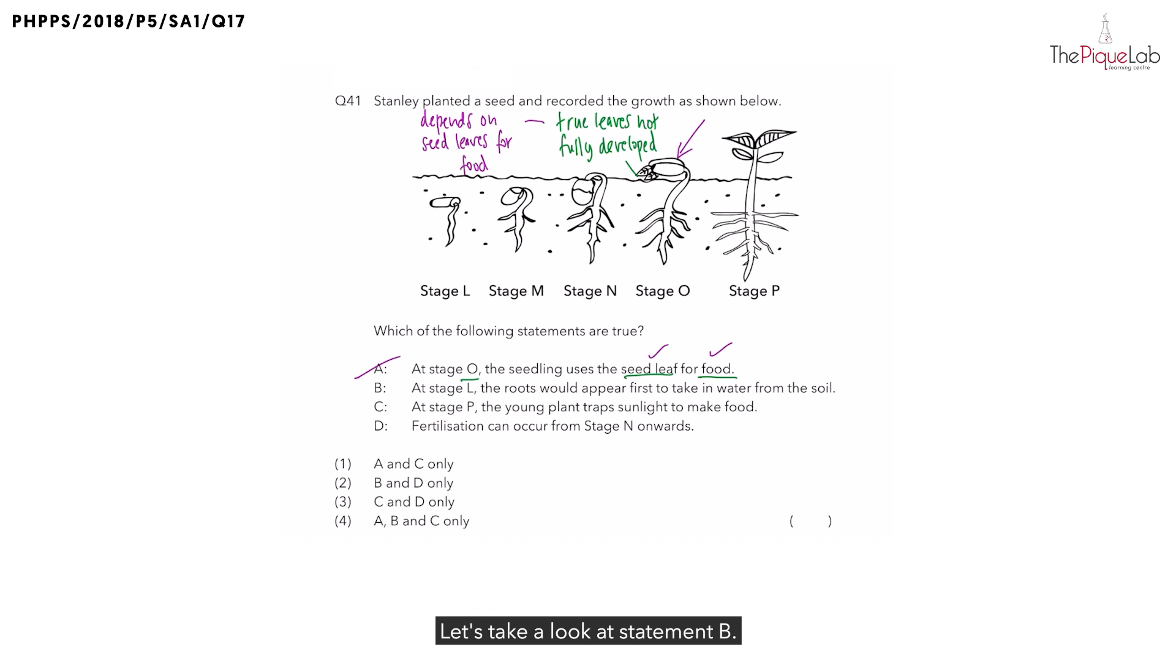Let's take a look at statement B. At stage L, the roots will appear first to take in water from the soil. What is the structure that first appears when the seeds germinate? That structure is the root. And what is the function of the root? The root's function is to take in water and mineral salts from the soil. The root also has another important function. It's to anchor the seedling firmly down to the ground. So is this statement correct? Yes, this statement is correct.